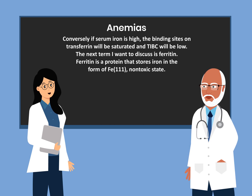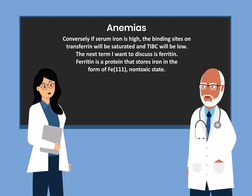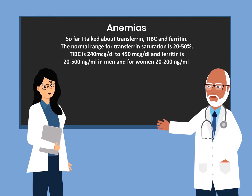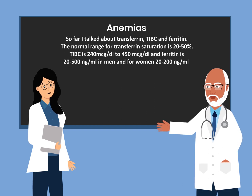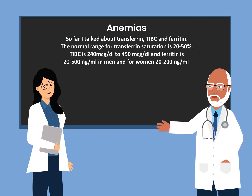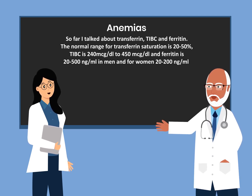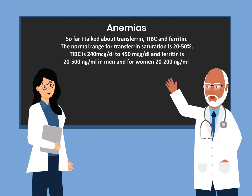The next term I want to discuss is ferritin. Ferritin is a protein that stores iron in the form of Fe3, a non-toxic state. The normal range for transferrin saturation is 20 to 50%. TIBC is 240 micrograms per dL to 450 micrograms per dL. Ferritin is 20 to 500 nanograms per mL in men and 20 to 200 nanograms per mL for women.